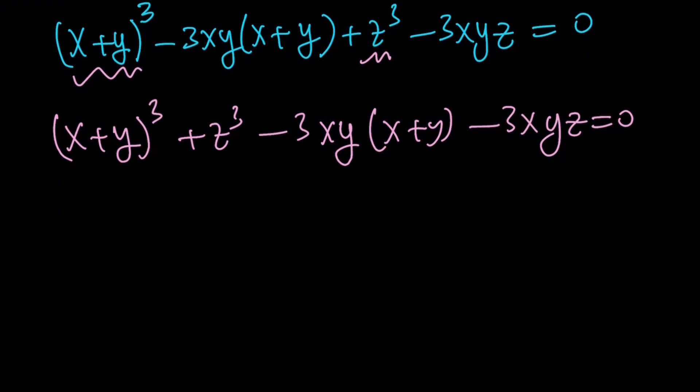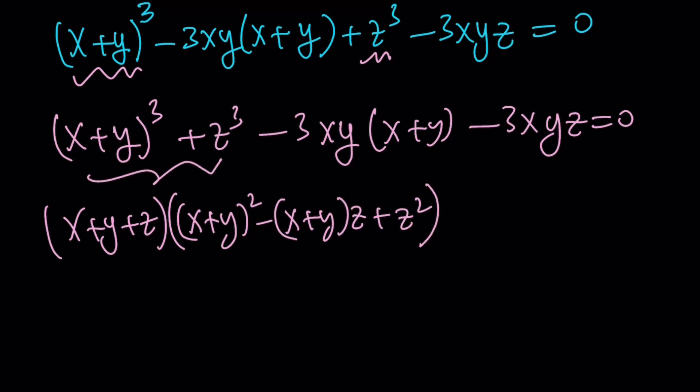And then I'm going to use the sum of two cubes. Remember, a cubed plus b cubed. a plus b, right? Multiply by a squared minus ab plus b squared, which is z squared in this case. That is the first part. And then the rest, notice that negative 3xy is a common factor. And inside we have x plus y plus z,